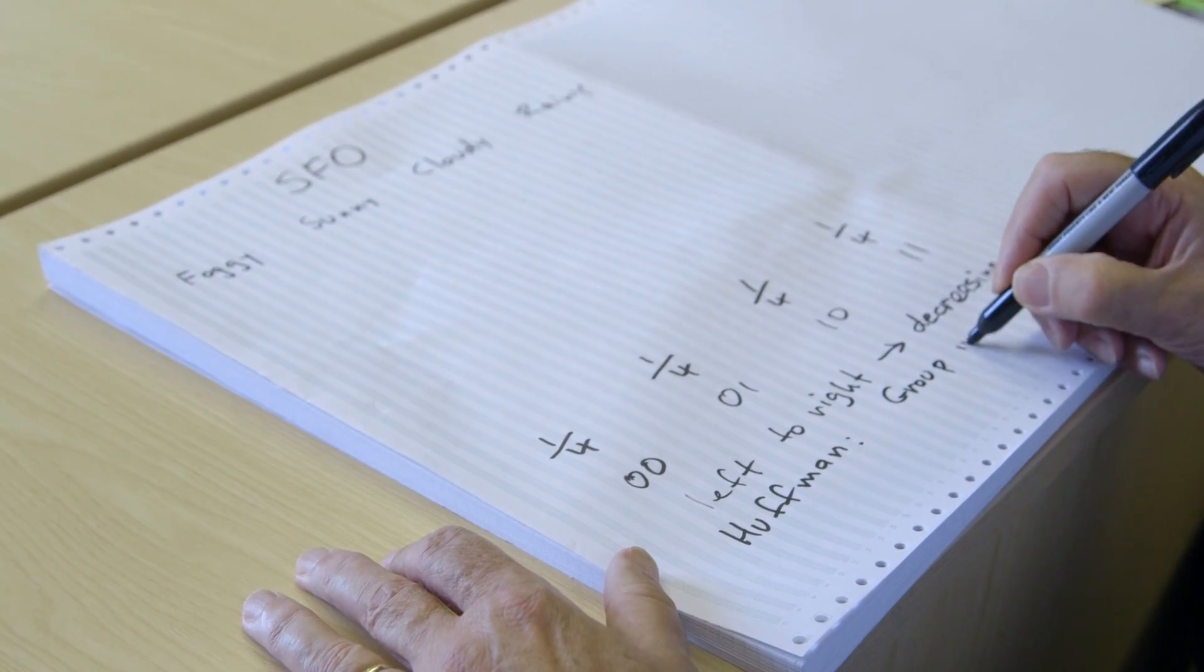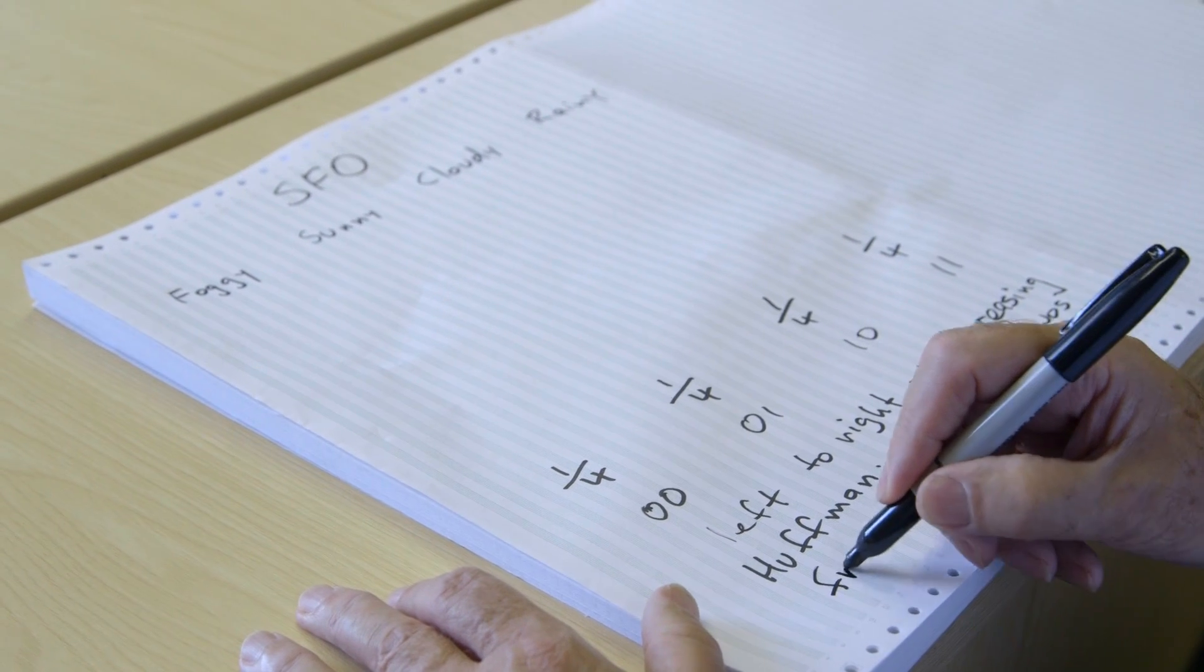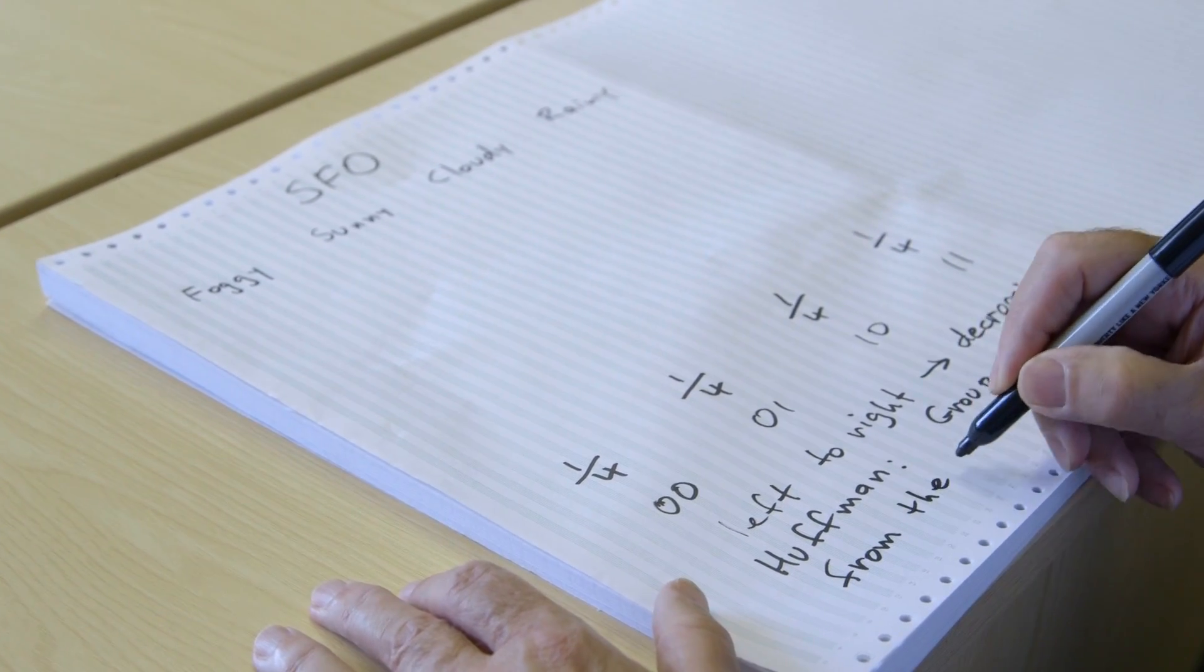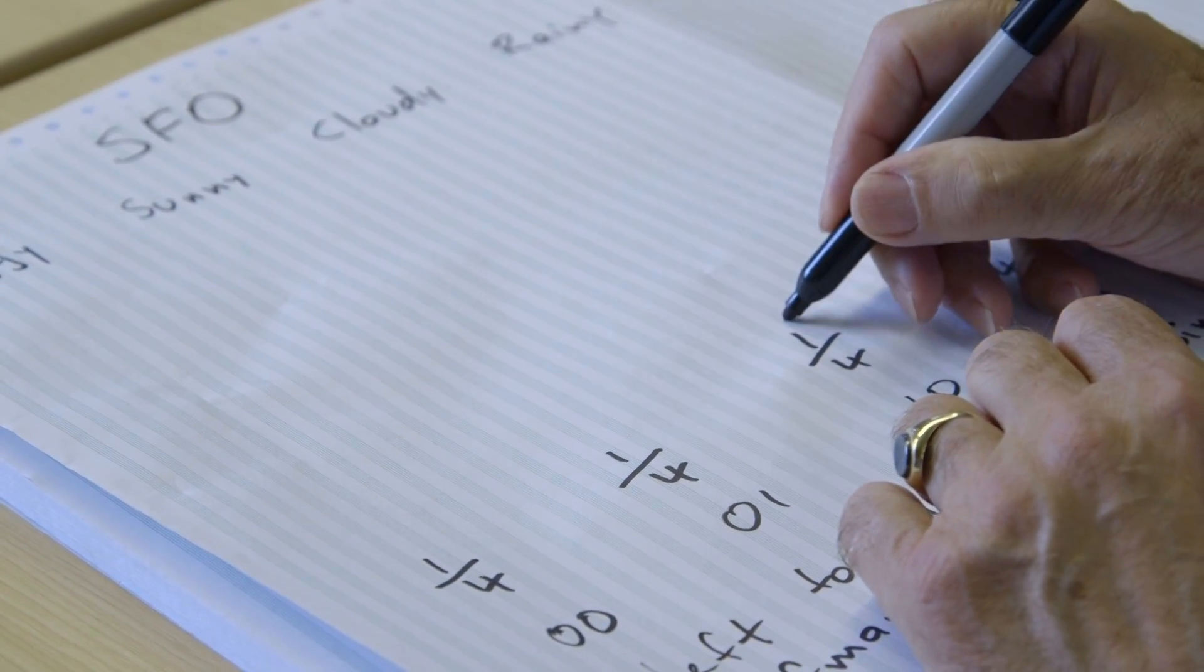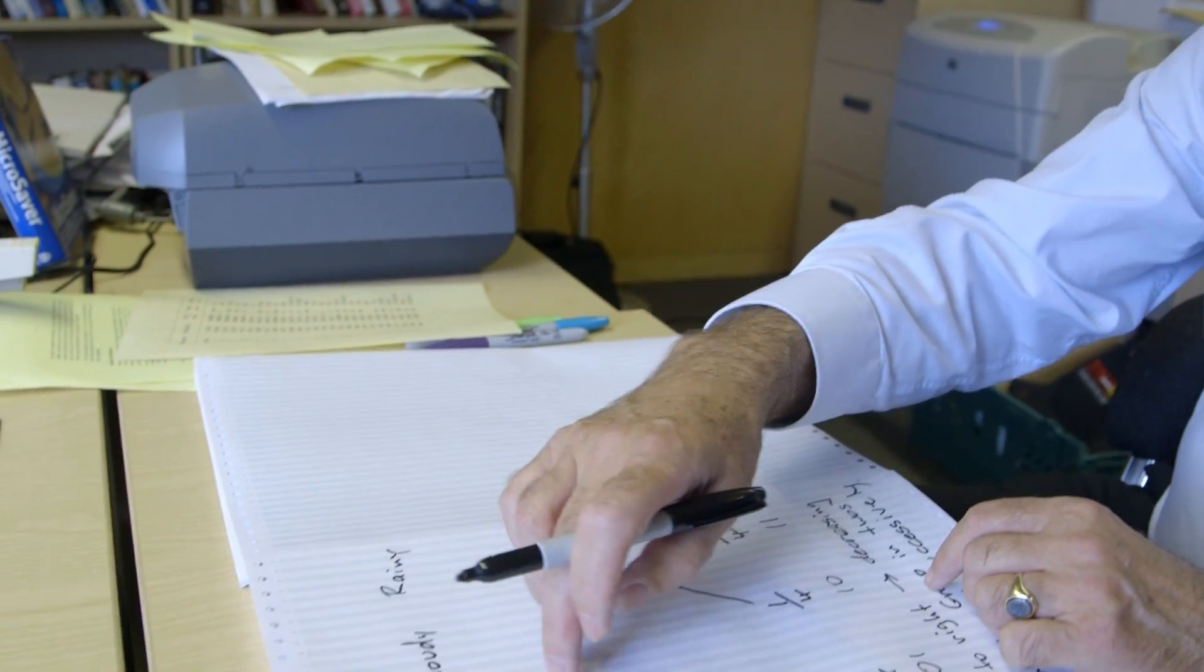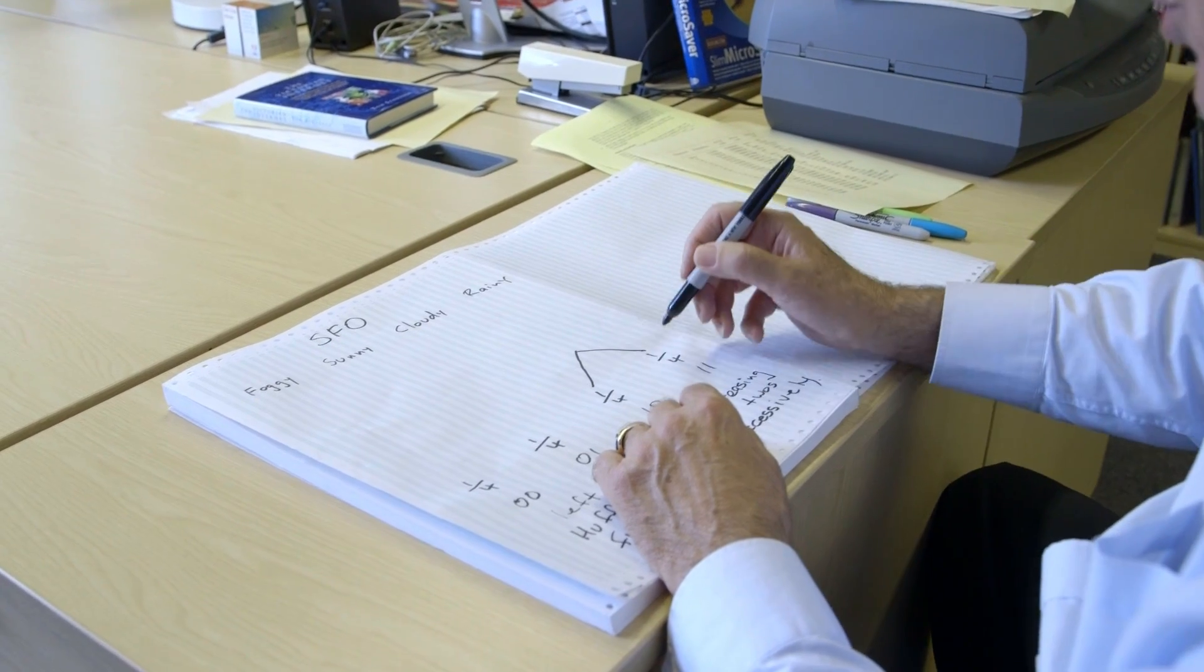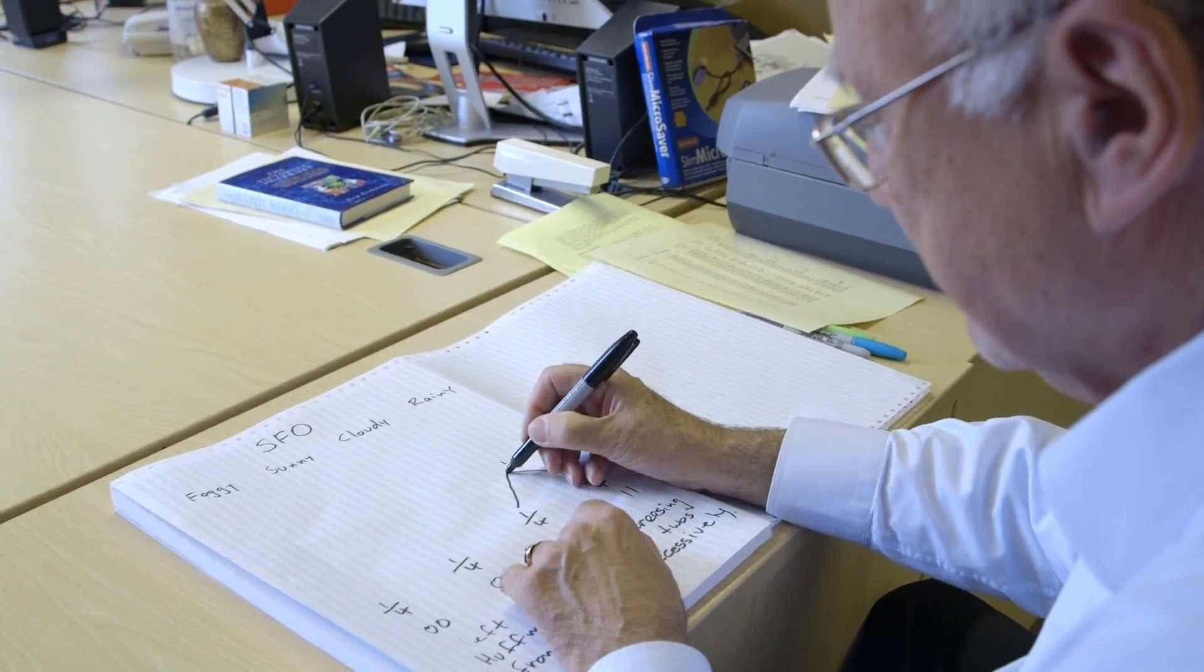The Huffman algorithm then says group in twos from the right successively. By going through this, I hope it'll be clear what I mean. Starting at the right, take the lowest two probabilities that you can see. So I group these together as the branches of a tree. Computer scientists always draw their trees, nearly always, upside down. The leaves, if you like, the base of the tree is down here. But the actual root, where it springs from, is up at the top.